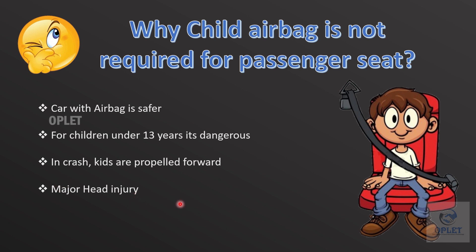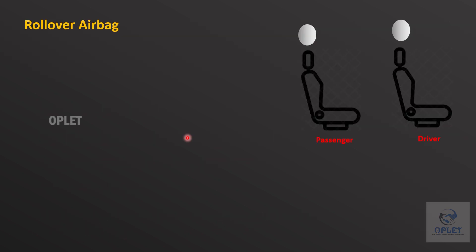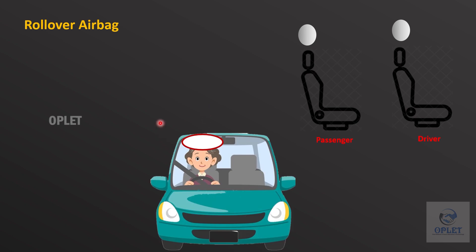The safest place for children is in the center of the back seat with lap and shoulder seat belts. Now let's explore rollover airbags. These airbags are mounted above the driver and passenger seat and are deployed in case of a vehicle rollover.